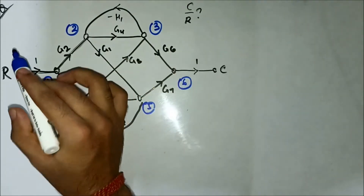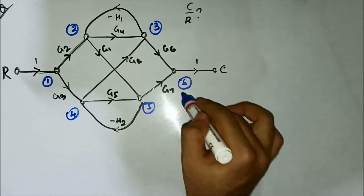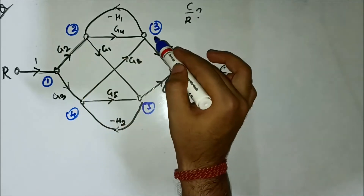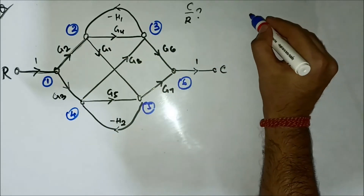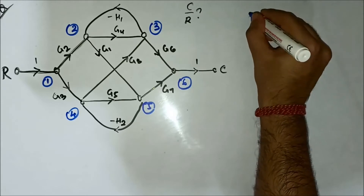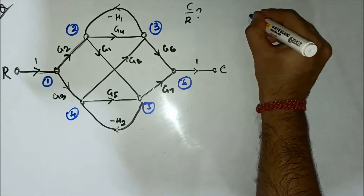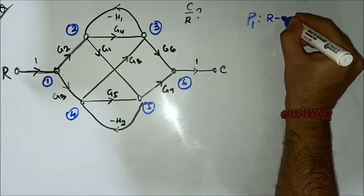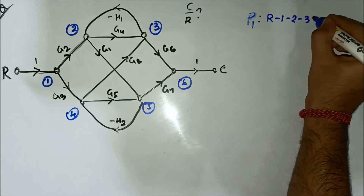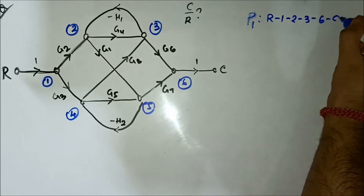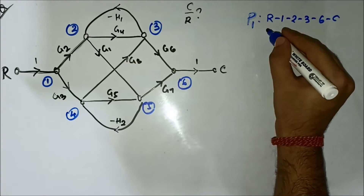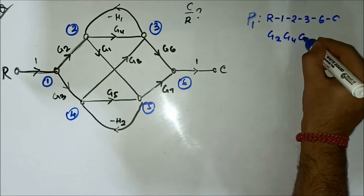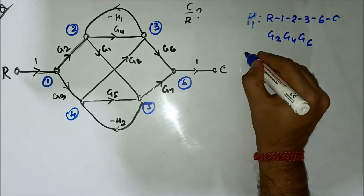For the identification of forward paths, we have to look for only forward direction arrows. One of the forward paths here is R → 1 → 2 → 3 → 6 → C. This is forward path P1: R, 1, 2, 3, 6, C, and its gain is G2 × G4 × G6.